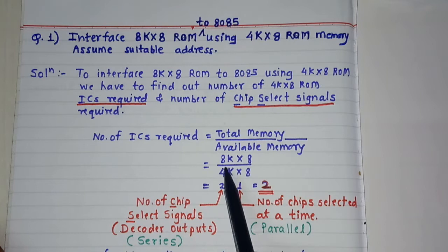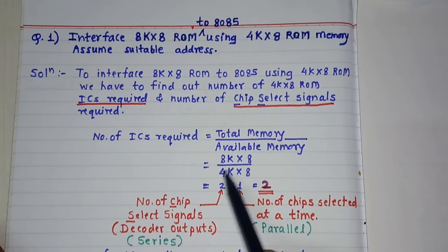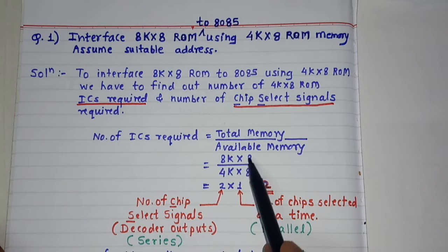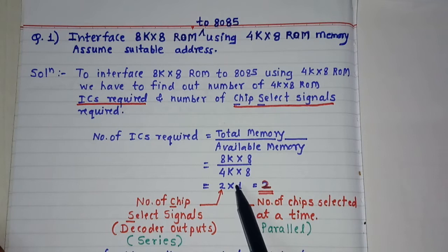By using this formula you can simply find out the number of memory ICs required, that is 2 ICs are required. So here I have simplified this as 2×1. So here 8K upon 4K is 2 and 8 by 8 is 1. But the meaning of this is somewhat different and if you understand this then it will become easier for the interfacing purpose.